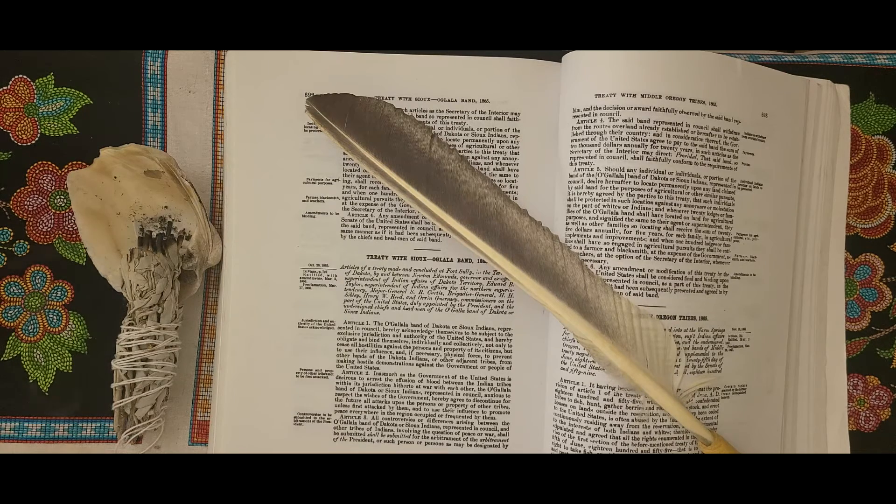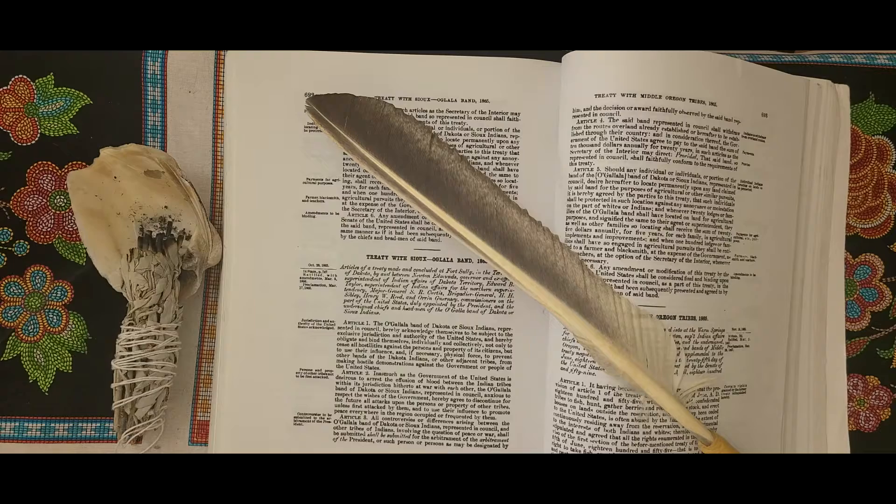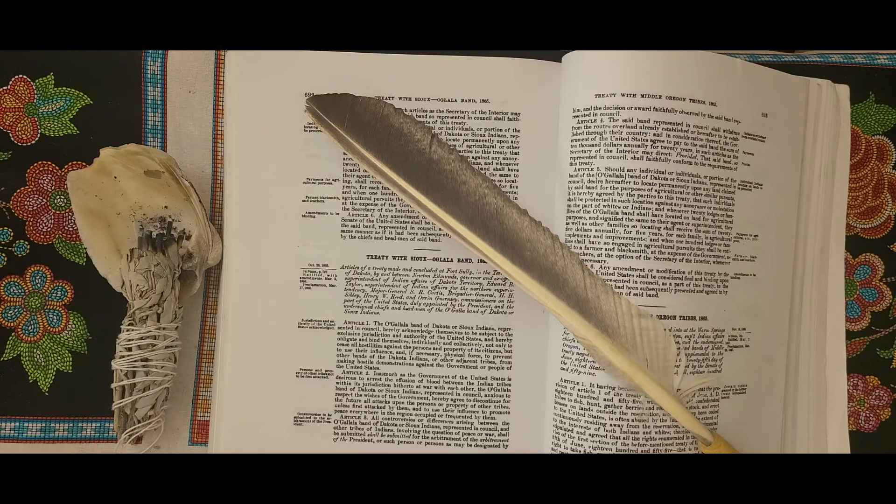The above signatures in this handwriting were made in presence of the undersigned on the 28th and 29th of October, 1865, at Fort Sully. Major A.P. Shreve, Paymaster U.S. Army; John Pattee, Lieutenant Colonel, 7th Iowa Cavalry.